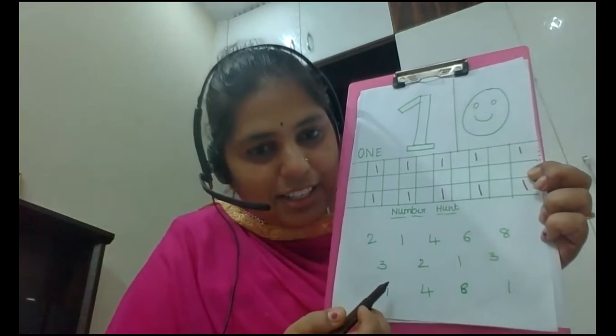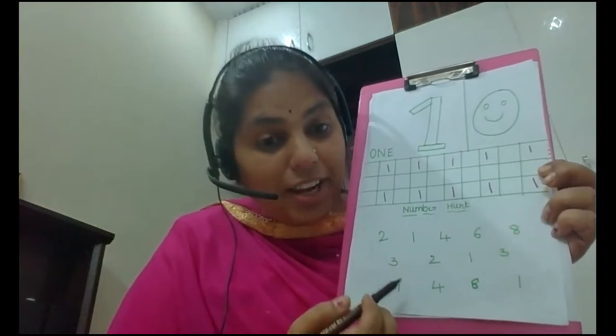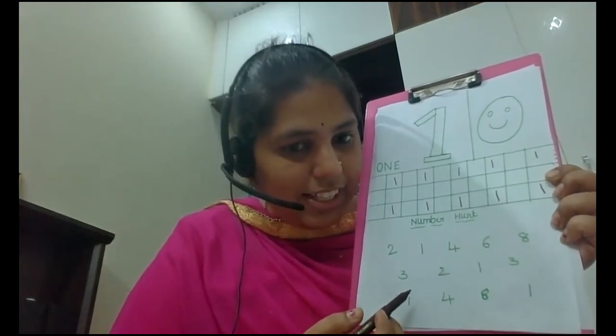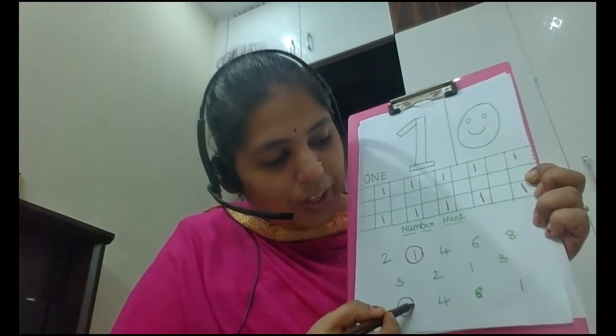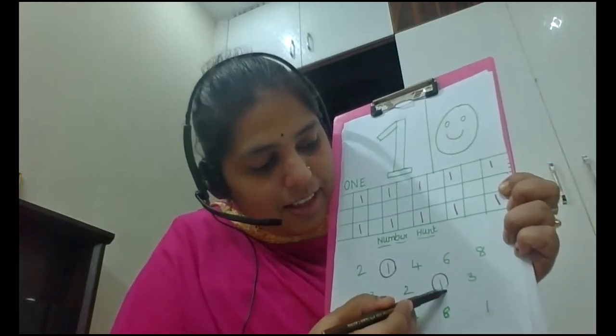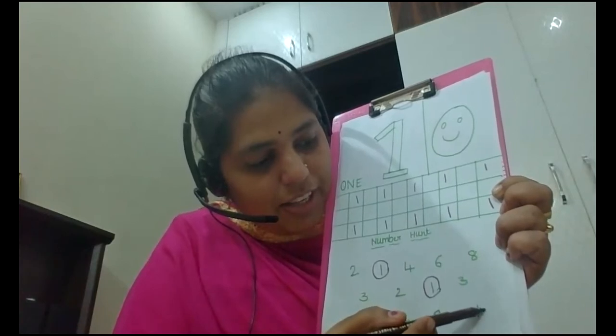Okay children, then number hunt — see here, so many numbers are here, right? Many numbers are here. Where is number one? You can identify, right? Where is number one? Yeah, see, this is one — make it a circle. You search where is one here, okay? Make a circle like this. Understood, children? Very good.